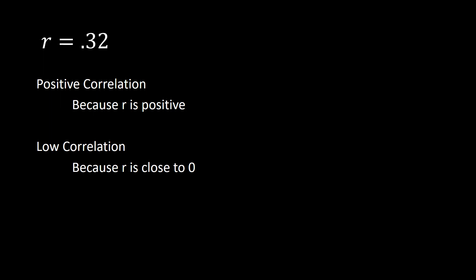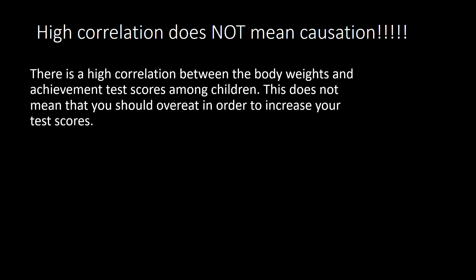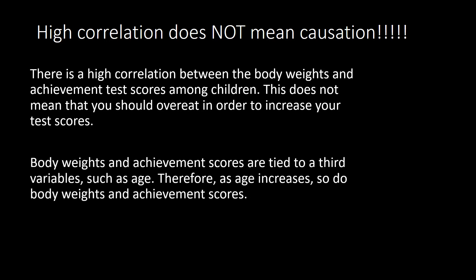Be careful because the concept of correlation means that there is a relationship. But just because something has high correlation does not mean that one thing causes the other. For example, there is a high correlation between body weights and achievement test scores among children. This does not mean you should overeat to increase your test scores. What might be happening is a third variable, such as age — as your age increases, so does your body weight as well as your achievement scores.